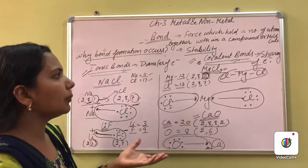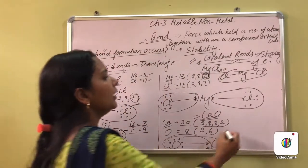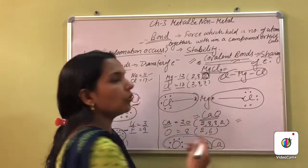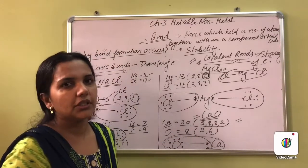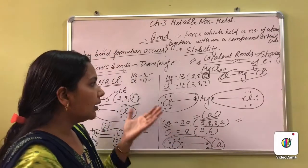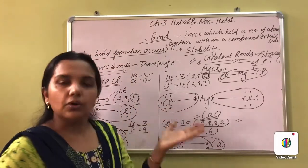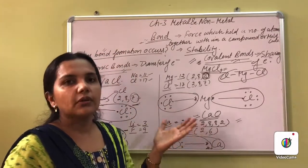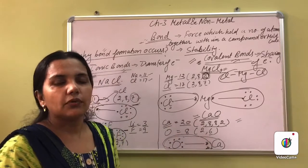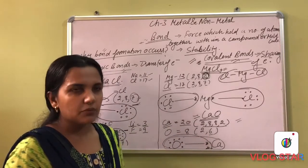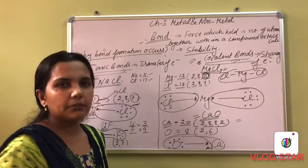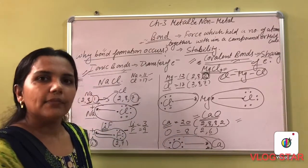So bonds should be very clear to you. Whenever any covalent or ionic bond structure — or electron dot structure or Lewis dot structure — of an element is asked in the exam, you have to be very careful. Thank you and have a nice day.